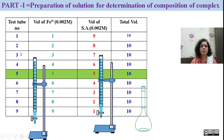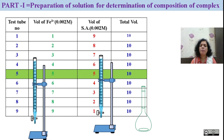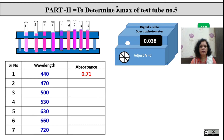We need test tubes number 1 to 9, where we are going to add 1 to 9 ml of Fe3+ solution. In test tube number 1, add 1 ml of iron solution and 9 ml of salicylic acid. The total volume is kept constant, and we do variation with iron and salicylic acid solution — this combination forms a complex of iron and salicylic acid. We choose solution number 5 — 5 ml of iron and 5 ml of salicylic acid — to find out the maximum absorbing wavelength for this complex.